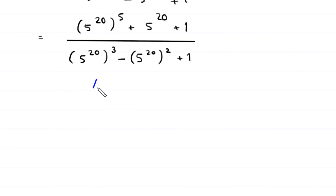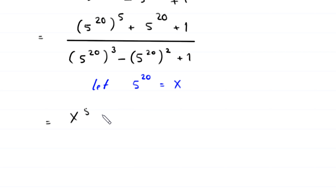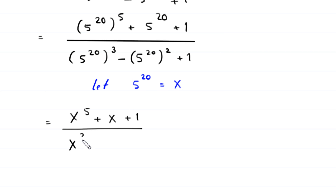We suppose that 5 to the power 20 is equal to x. So this expression will become x to the power 5 plus x plus 1, divided by x cubed minus x squared plus 1.